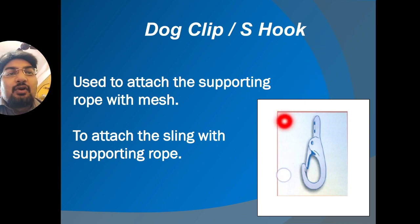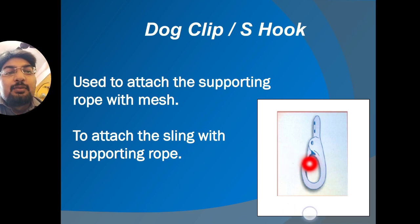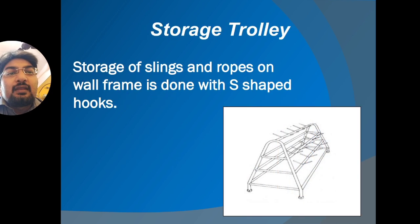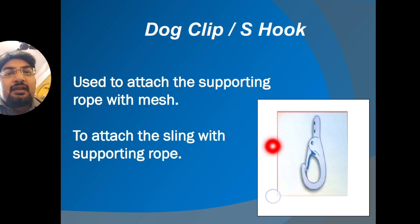The dog clip is a movable part — similar to what you might find on a keychain — used to attach the supporting rope to the mesh and to attach the sling with the supporting rope, so that the rope does not come out of the sling. The S hook is shaped like an 'S' and is used for the fixed point.